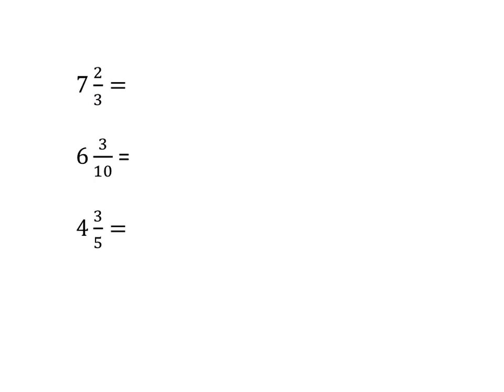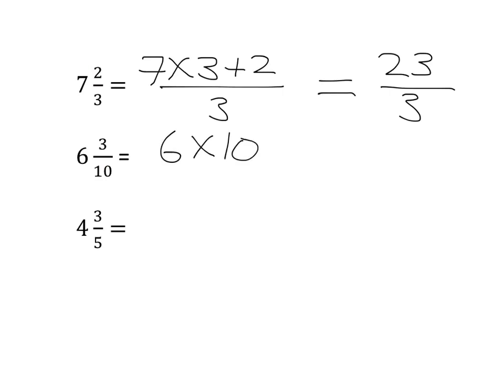So what is 7 and 2/3 as an improper fraction? Well to do that we are going to say 7 multiplied by 3 which gives us 21 and then we're going to add on the 2. So we're going to say 7 times by 3 add on the 2 and we're still dealing in thirds. So we have 21 plus 2 which is 23 over 3. Or if we had 6 and 3/10 here we would say 6 times 10 and then we need to add on those 3 extra. So we need to add on those 3 and we're still dealing in tenths so we will have 63 over 10.